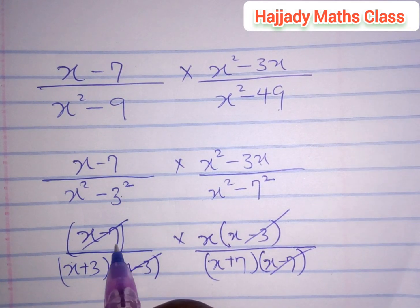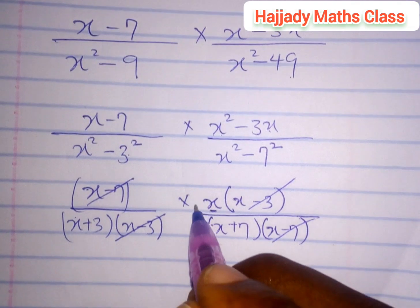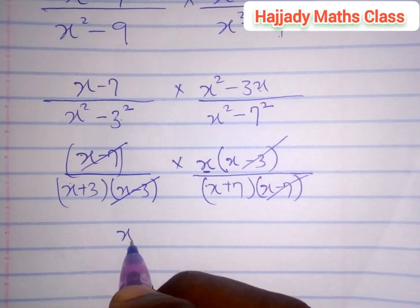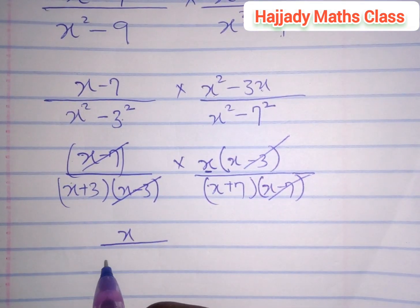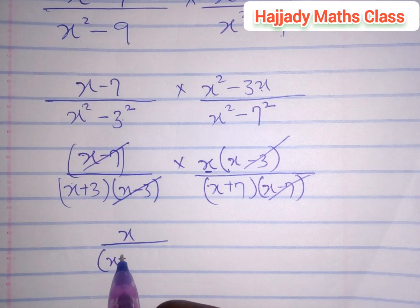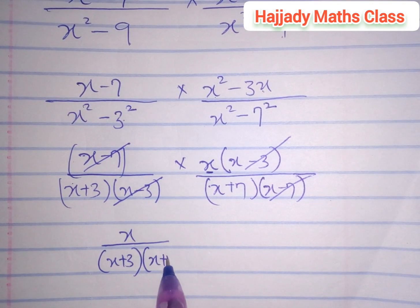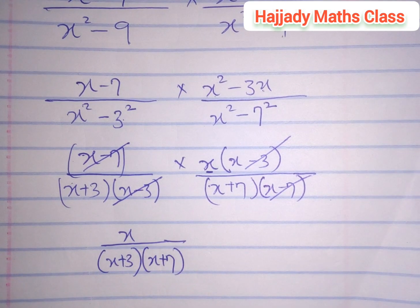So with our numerator, what we have left is only x. Over the denominator, we have (x + 3)(x + 7). This is what we have as our final answer.